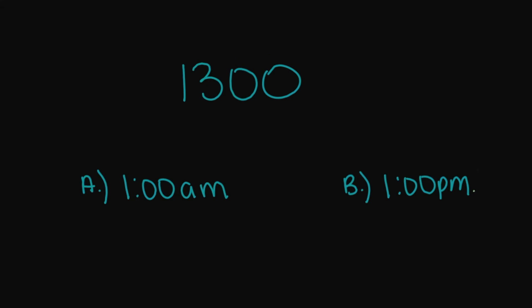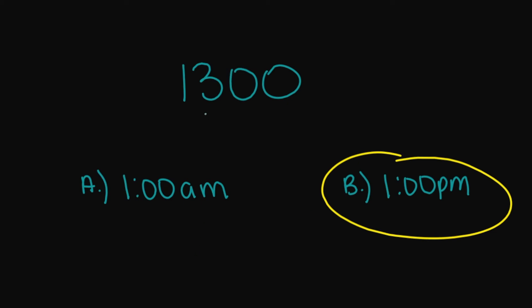So let's look at 1300. Is this going to be A, 1 a.m., or B, 1 p.m.? 1300 is going to be B, 1 p.m., because we subtract 12 and that's going to take us back to our regular time.